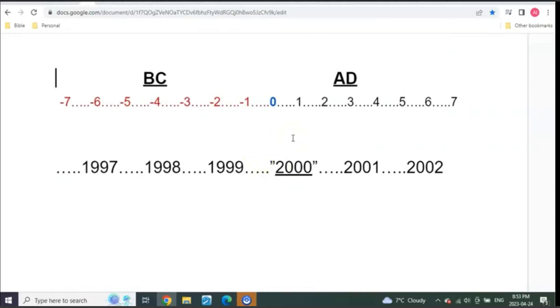What happens is we know the Gregorian calendar when they counted for Christ they don't use a year zero. So look what happens if you remove year zero.